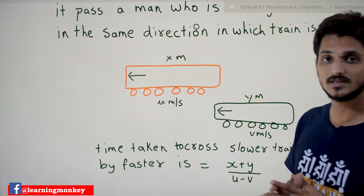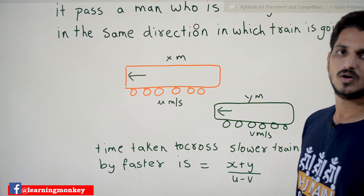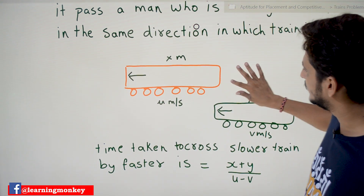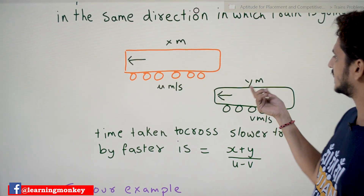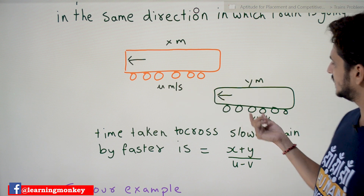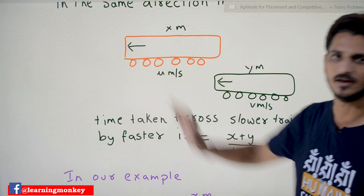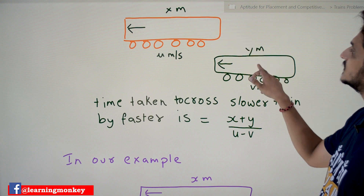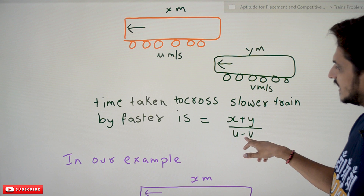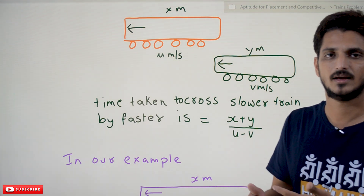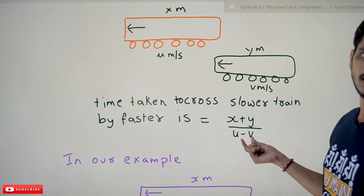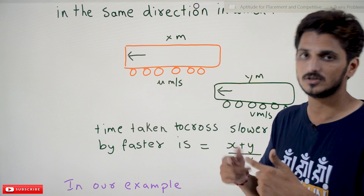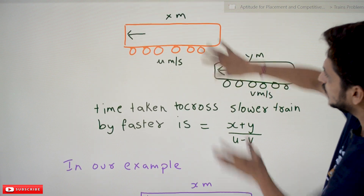In our last class we discussed: when two trains are moving in the same direction, the time taken for the faster train to cross the slower train is time = distance / speed. Distance is x plus y (the lengths of both trains), and relative speed is u minus v. The reason why distance is x plus y — that intuition was provided in our last class when we discussed the formula.